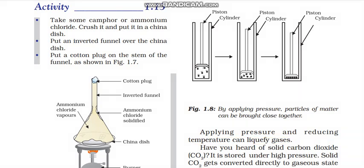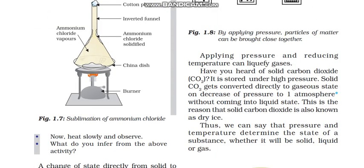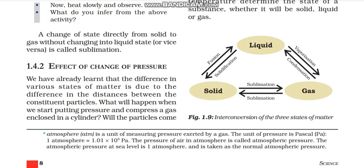Have you ever heard of solid carbon dioxide, that is CO₂? It is stored under high pressure. Solid carbon dioxide gets converted directly into the gaseous state on decrease of pressure to 1 atmosphere. One atmosphere (1 ATM) is the standard unit of pressure. Because solid CO₂ converts directly to vapor without becoming liquid, it is known as dry ice. Thus, pressure and temperature together determine the state of a substance — whether it will be solid, liquid, or gas.